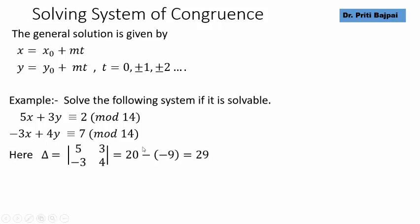The first step will be to check whether such a system is solvable or not. We will first form the determinant 5 into 4 minus 3 into minus 3 which gives us 29 and we can see the gcd of this determinant and the mod 14 is 1.